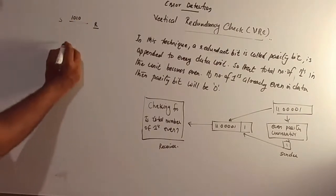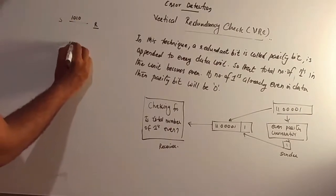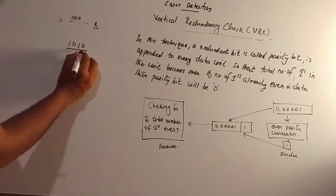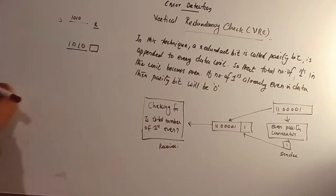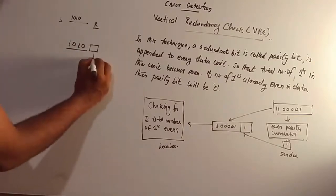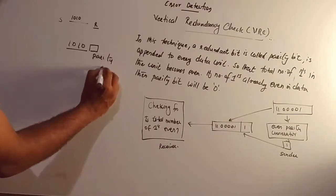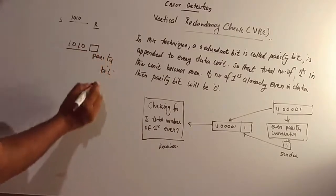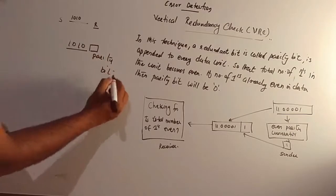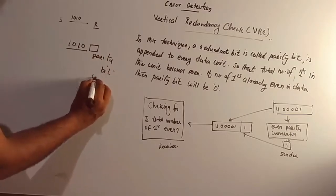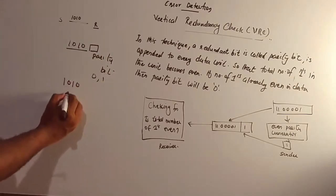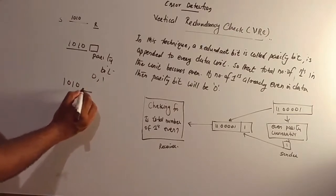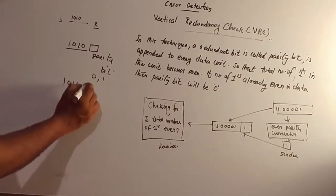So we have to show you how to send data. We have to send one extra bit — this is the parity bit. We have to add a 0 or add a 1.